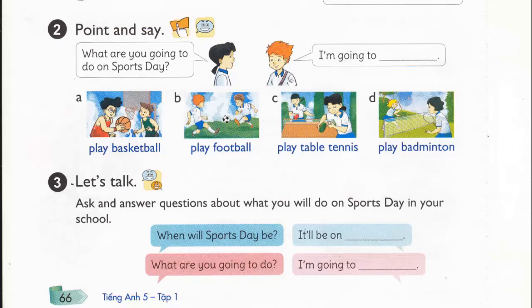Activity 2. Point and say. What are you going to do on sports day? I'm going to play basketball. A. Play basketball. B. Play football. C. Play table tennis. D. Play badminton.